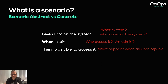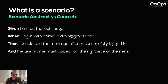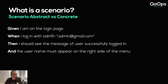Let's see another one: Given I am on the login page, when I log in with an admin — put in quotes, this will be sent to the code — then I should see the message 'user successfully logged in' and the username must appear on the right side of the menu. This is a little bit better. Now I know I'm on the login page, I know who is accessing, and I know what happens — you should see some sort of message.